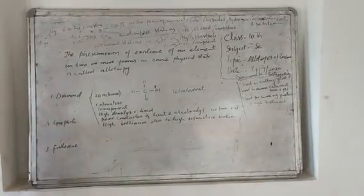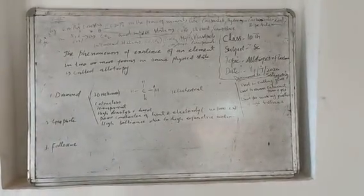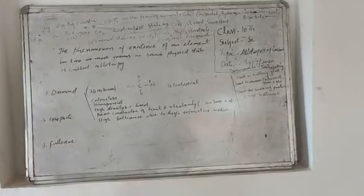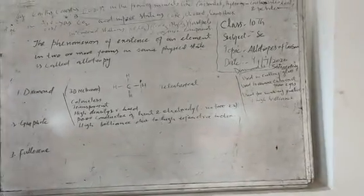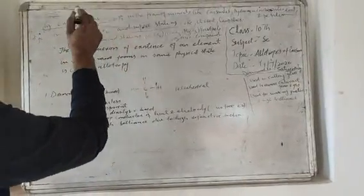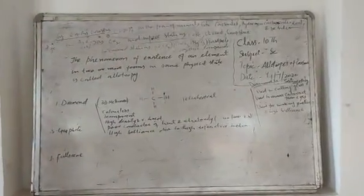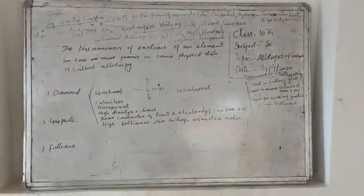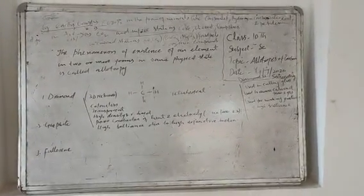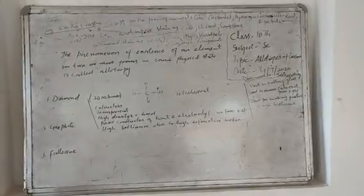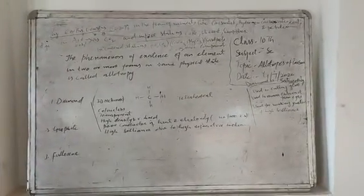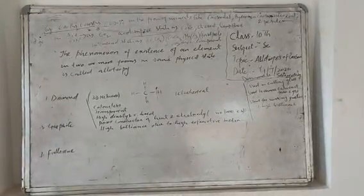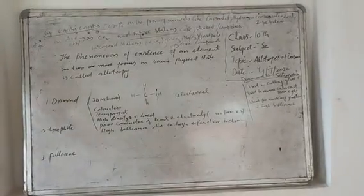Today we are going to throw light on the subject science and our topic today is allotropes of carbon. As you know, the percentage of carbon in earth's crust is 0.02% and it is in the form of minerals like carbonates, hydrogen carbonates, coal and petroleum. And the percentage of this carbon in air is 0.03% and it is in the form of compound carbon dioxide, CO2.